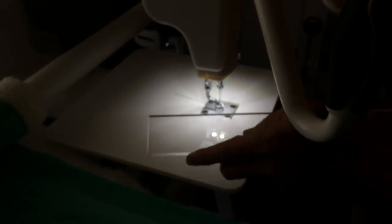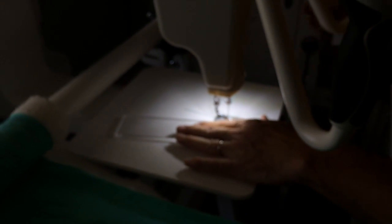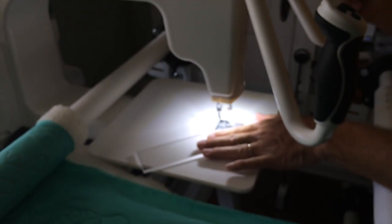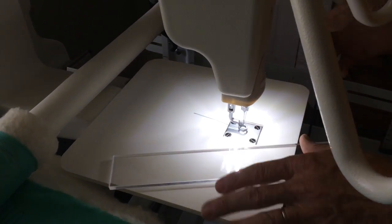In case you are wondering, the ruler base is there to give your ruler a stable surface that you can rest it on when quilting.